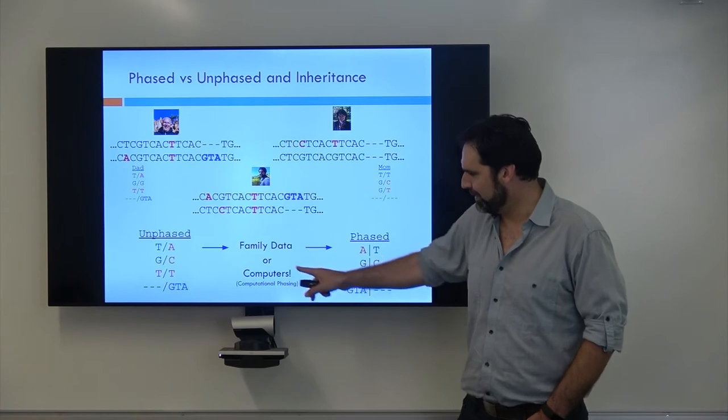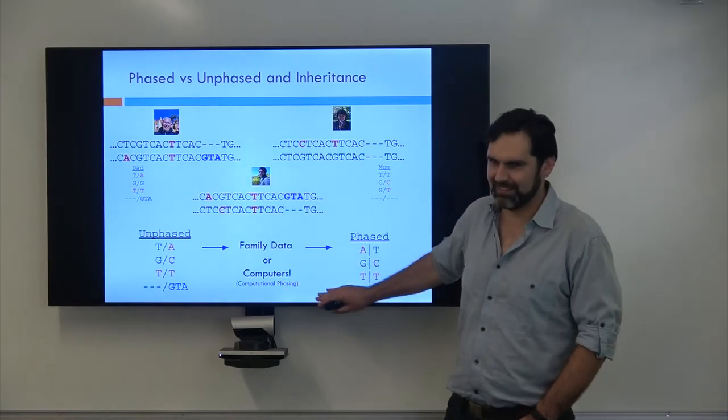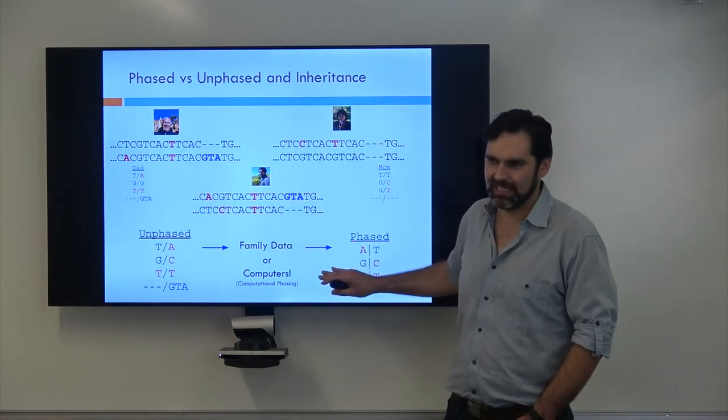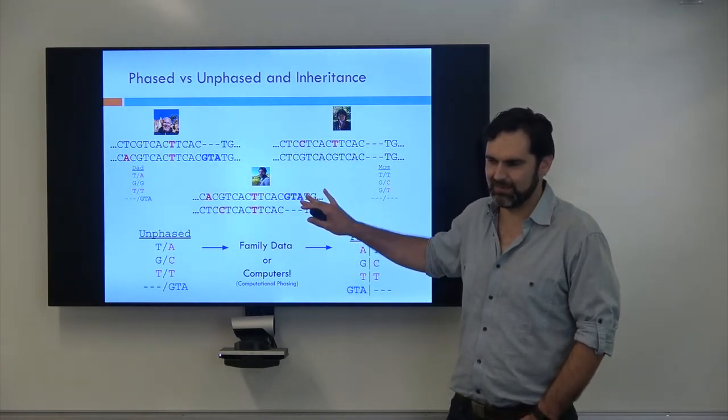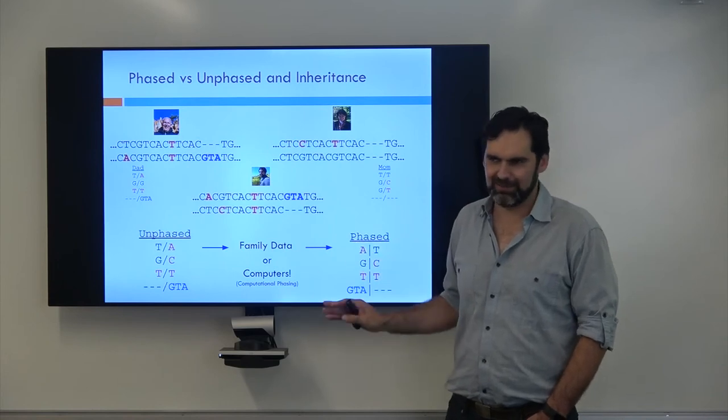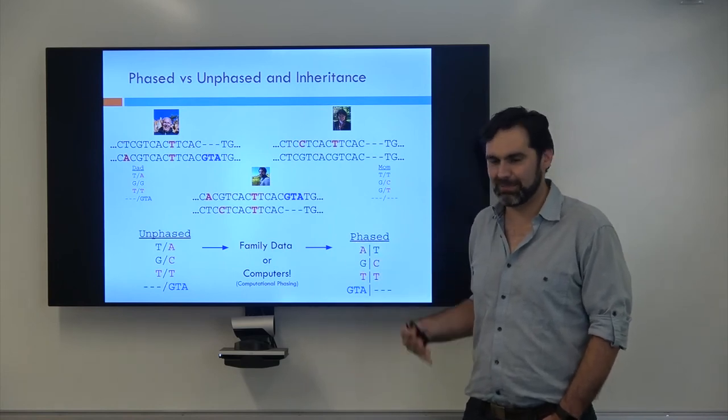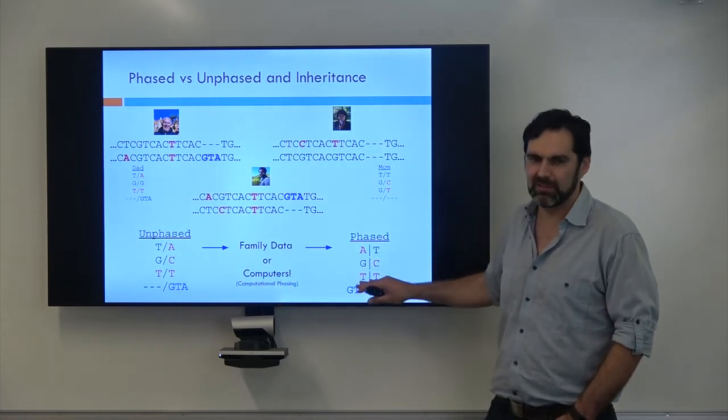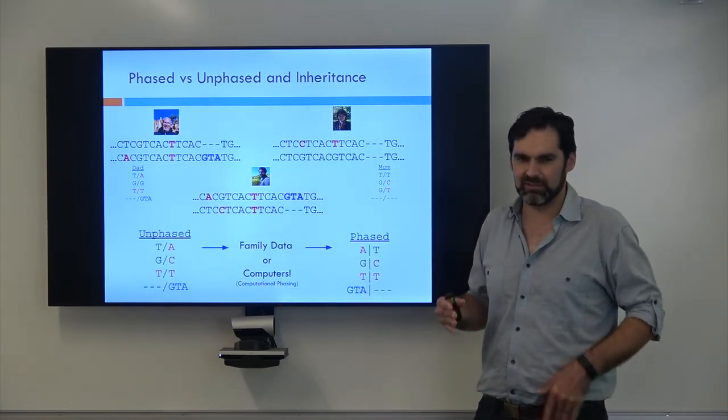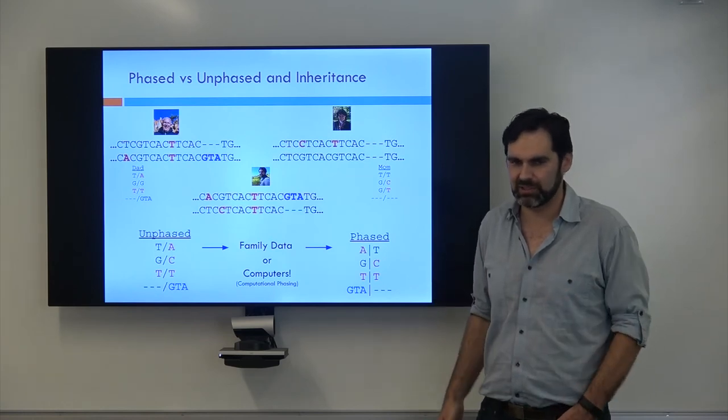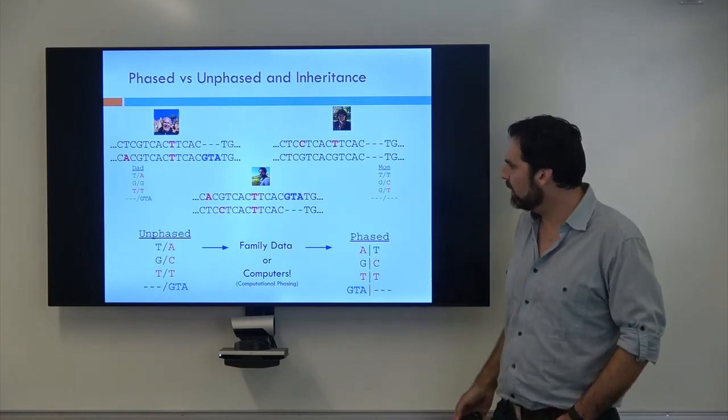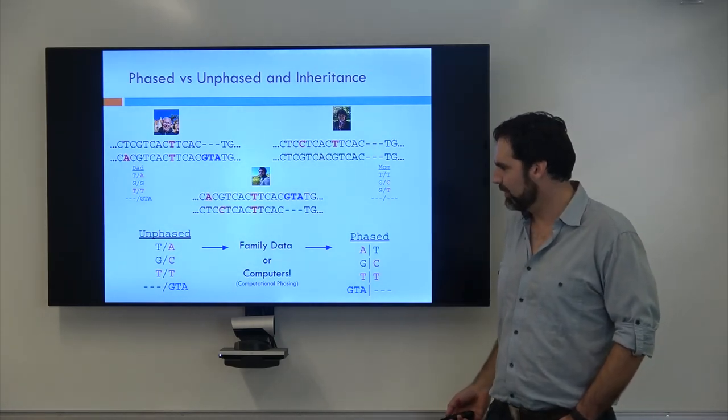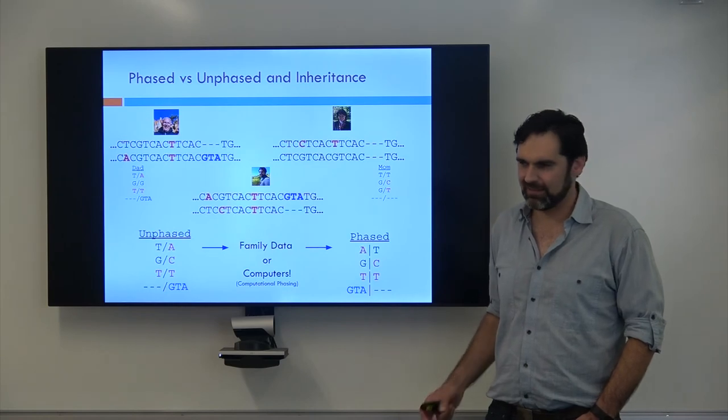And so we came up with these things called computers and we have great statistical algorithms. And we can actually do a lot of this phasing now without having any access to family data. There's clever ways to do that. We'll talk about this in another module as well. But the point is, we can now go from one of those sequencing machines to having a decent readout of what my DNA actually looks like and what different variants are in which chromosomes. And that's the end of module one. So you now know how we read out our DNA and also what the variation looks like on it.